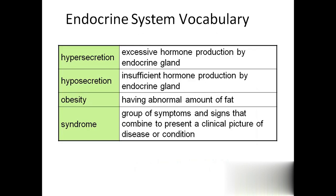Having abnormal body fat we call obesity. A syndrome is a group of signs and symptoms combined to present in one clinical picture. For example, diabetes mellitus is a syndrome. In that syndrome, the person will have tiredness - we call it lethargy - and giddiness. Sometimes they have low blood sugar levels, polyuria, polydipsia, glycosuria, and weight loss. All these together we call a syndrome.